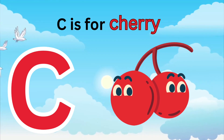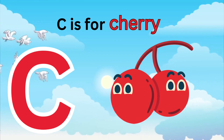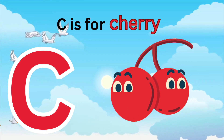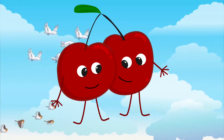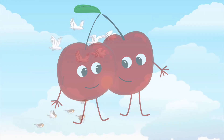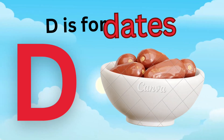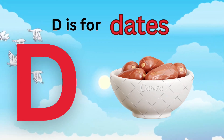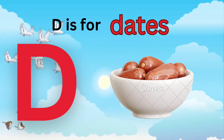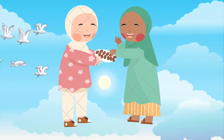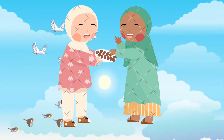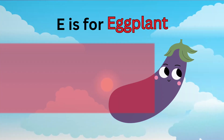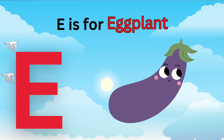C is for Cherry. Ch, Ch, Cherry. C is for Cherry. Ch, Ch. D is for Date. D, D, Date. D is for Date. D, D, D.